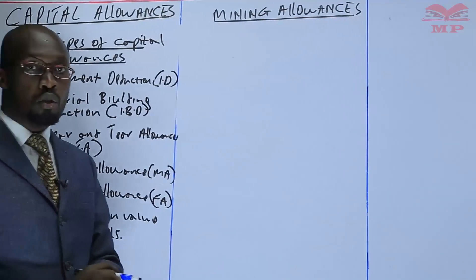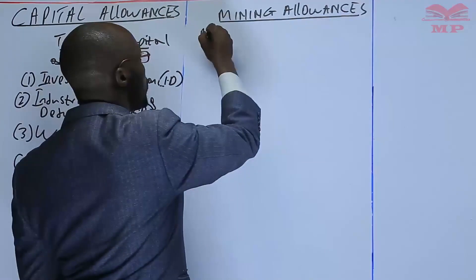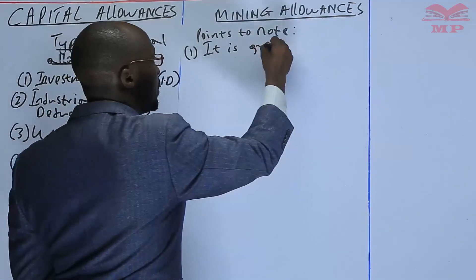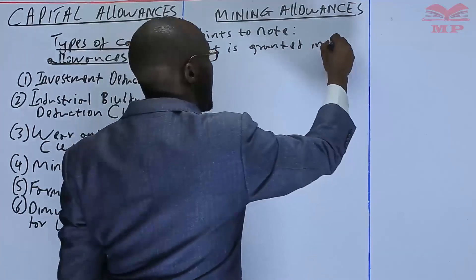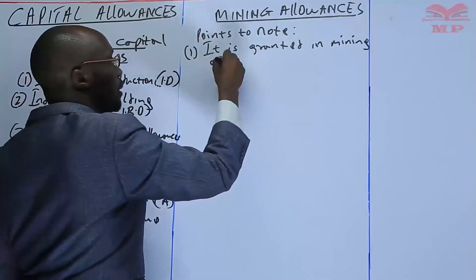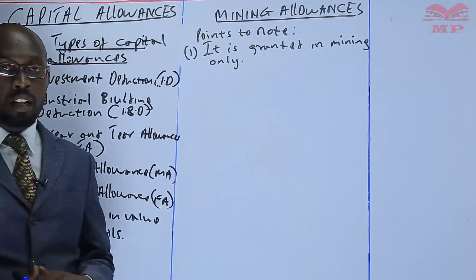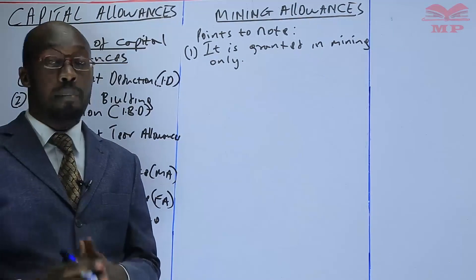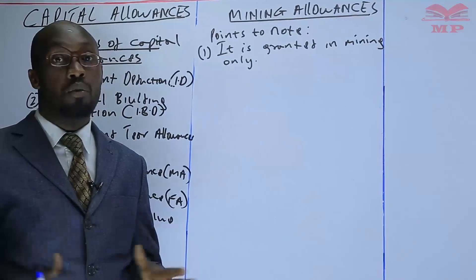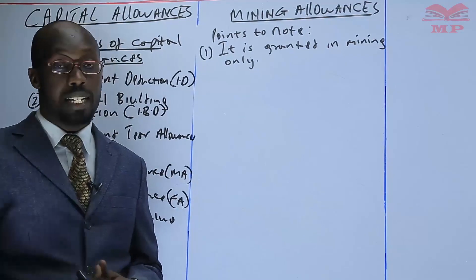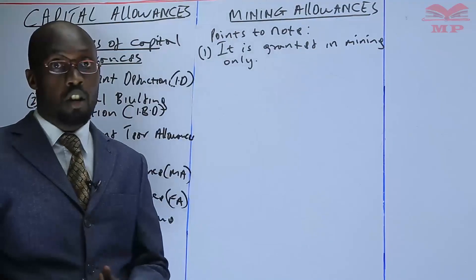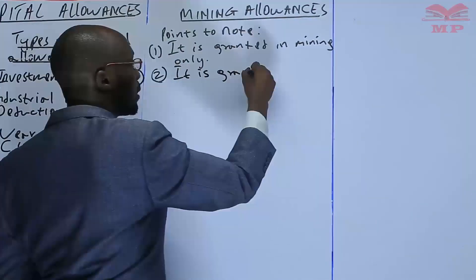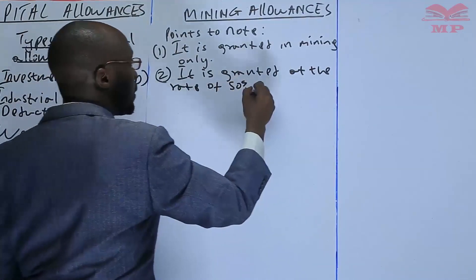Points to note about mining allowance: first, it is granted in mining only. You only claim the mining allowance if you are doing mining. If you are doing any other business, don't claim it. For example, if you are doing farming you cannot claim mining allowance; if you are doing manufacturing you cannot claim mining allowance. In manufacturing you can only claim investment deduction, and in farming you will see farm work allowance.